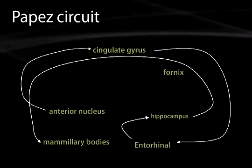To describe Papez's circuit in detail: information filters into the entorhinal cortex, then enters the hippocampus through the perforant pathway — a fiber tract connecting entorhinal to hippocampal cells. The hippocampus outputs via the fornix, which synapses in the mammillary bodies; the mammillary bodies send output to the anterior nucleus of the thalamus, which outputs to the cingulate gyrus, which filters information back to the entorhinal cortex. That is Papez's circuit — important in memory and emotion. Not everything is fully worked out, but it represents a highly interconnected set of structures that is neuroanatomically significant.